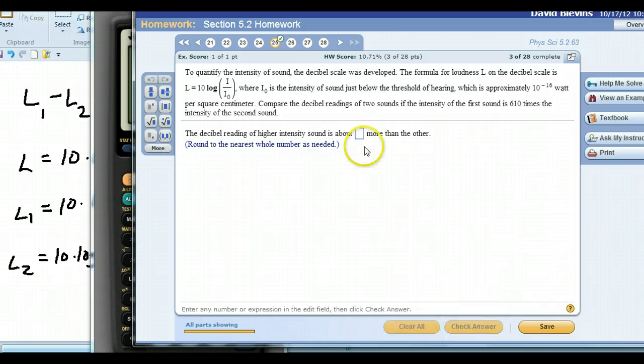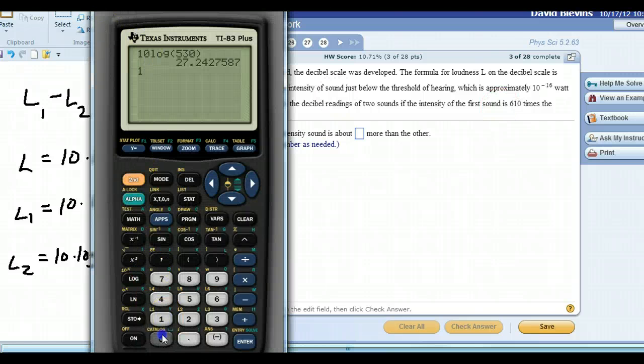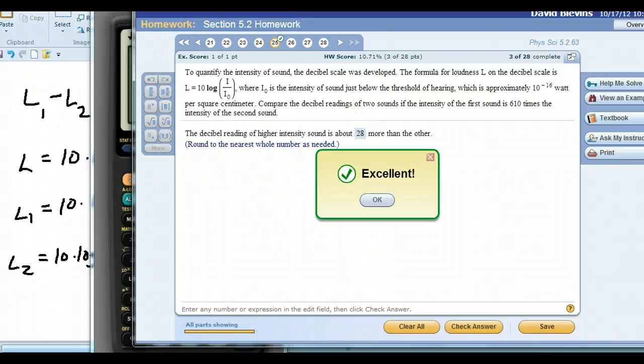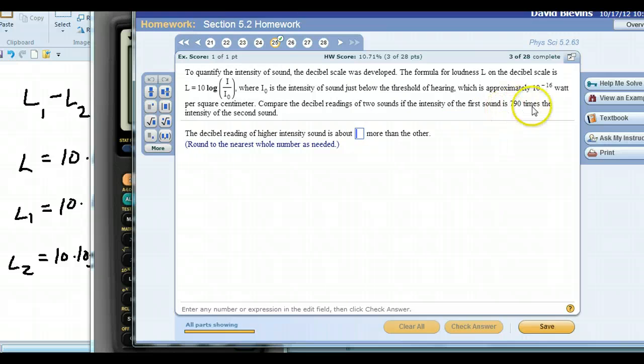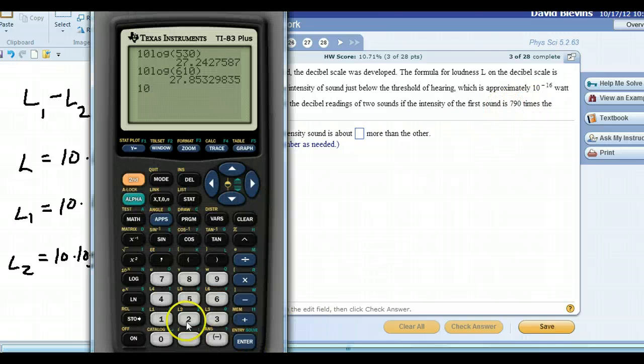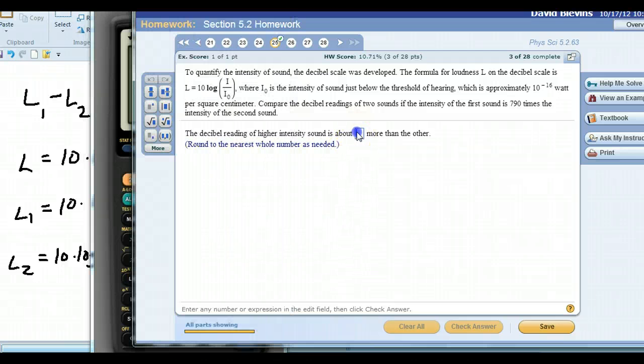So I'm going to hit similar exercise, just show you it works. This time the intensity factor is 610, so I'm going to put in 10 log 610, enter. And that rounds to 28. All right, this time it's 790, 10 log 790. That rounds to 29. Okay, so that's going to work every time. Just replace this I over I naught with the intensity factor and that way you won't rip your hair out or beat your head against the wall too much. All right.